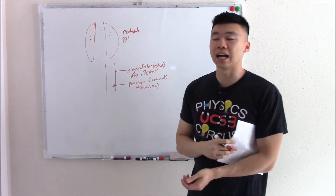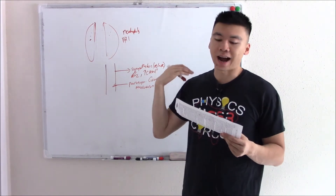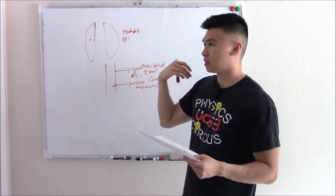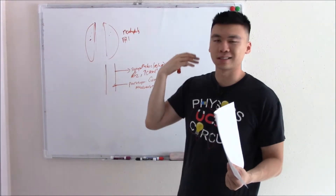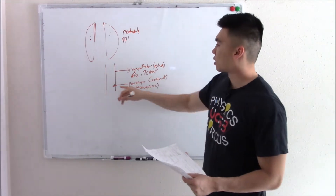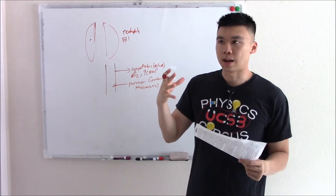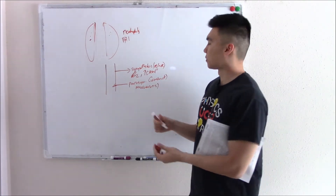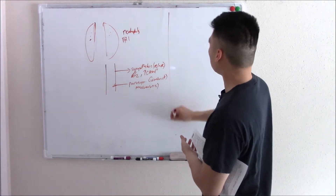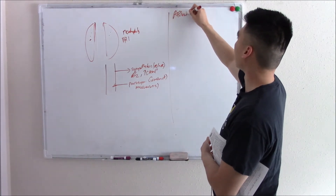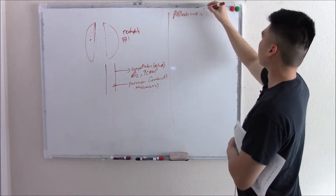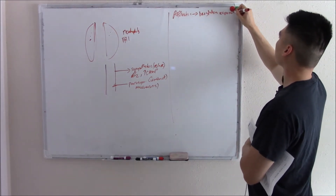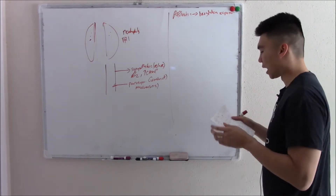In asthma, however, there's a heightened response to that stimuli. It creates an incredible inflammatory response, an incredible amount of mucus, and an incredible amount of bronchospasm. That bronchospasm and mucus causes the obstruction — that's why we're talking about an obstructive lung disease. In asthmatic lungs, there's a heightened response to those stimuli.